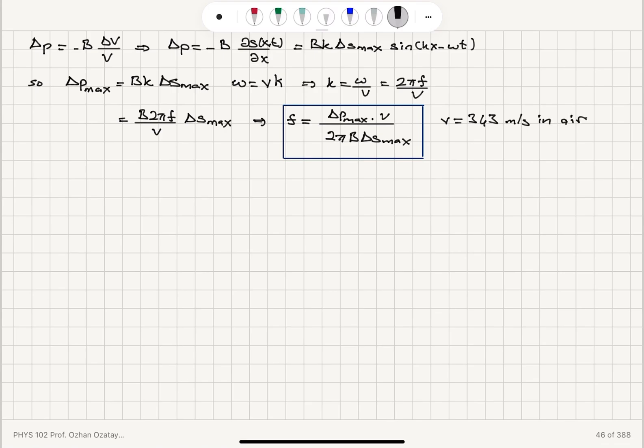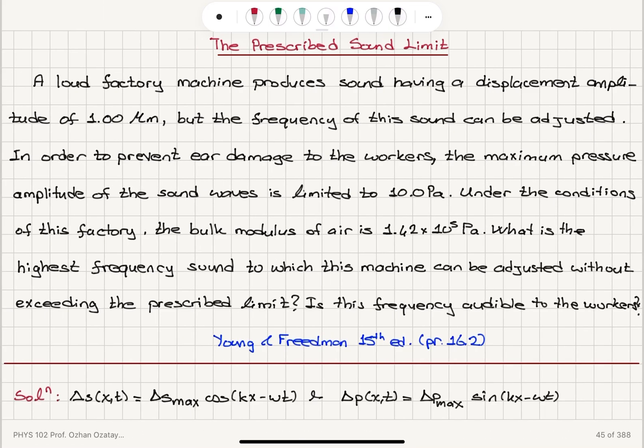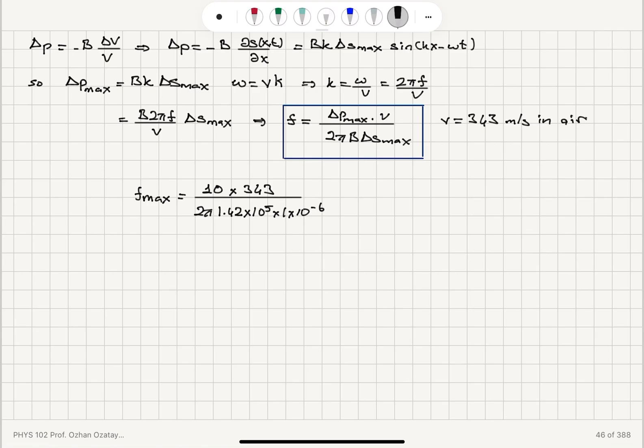So we can calculate the maximum frequency F max to be the pressure amplitude delta P max, which is 10 Pascals, times the speed of sound 343 meters per second, divided by 2 pi times bulk modulus 1.42 times 10^5 times delta S max 1 times 10^-6 meters. We have bulk modulus, 1 micrometer displacement amplitude and 10 Pascals maximum pressure. So this will give us a maximum frequency of 3840 hertz.